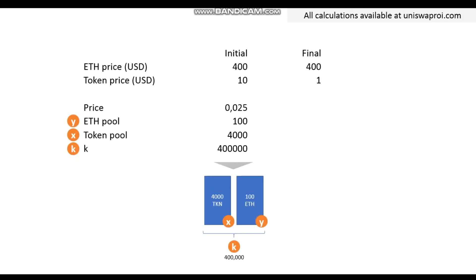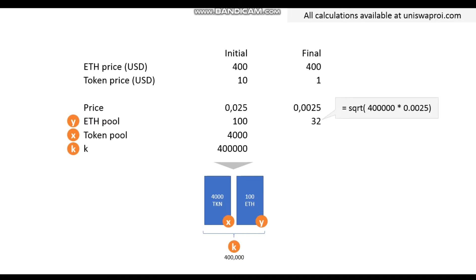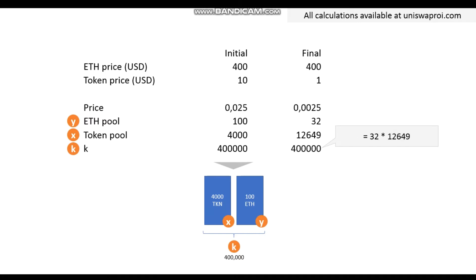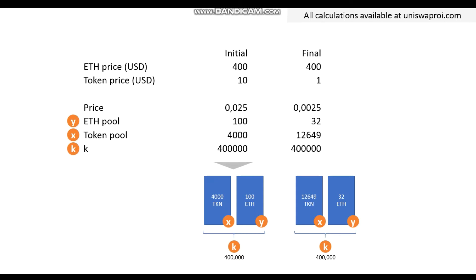I want to walk you through what happens step by step if the price of the token goes from the initial scenario of $10 to the final scenario of $1, assuming Ethereum price stays the same. Initially, the price ratio is 0.025, the Ethereum pool is 100, the token pool is 4,000, and the invariant K is 400,000. If the token price becomes $1, then the price ratio is 1 divided by 400, which is 0.0025. The Ethereum pool becomes 32 — the square root of 400,000 times 0.0025. The token pool similarly becomes 12,649. K stays constant, by definition.